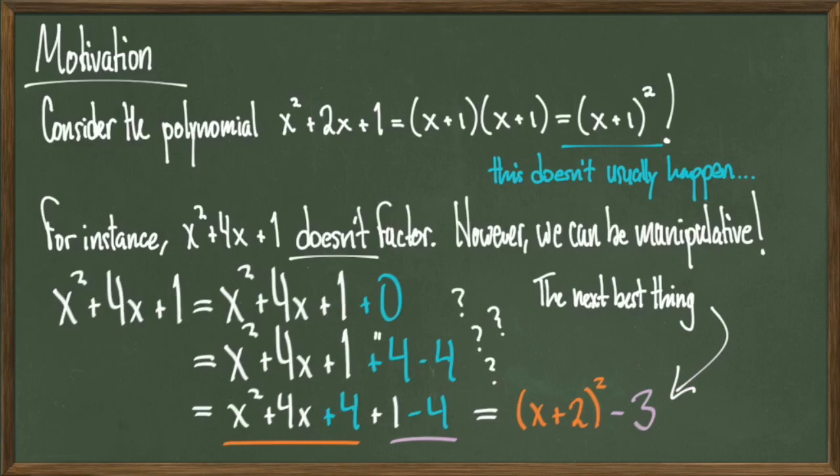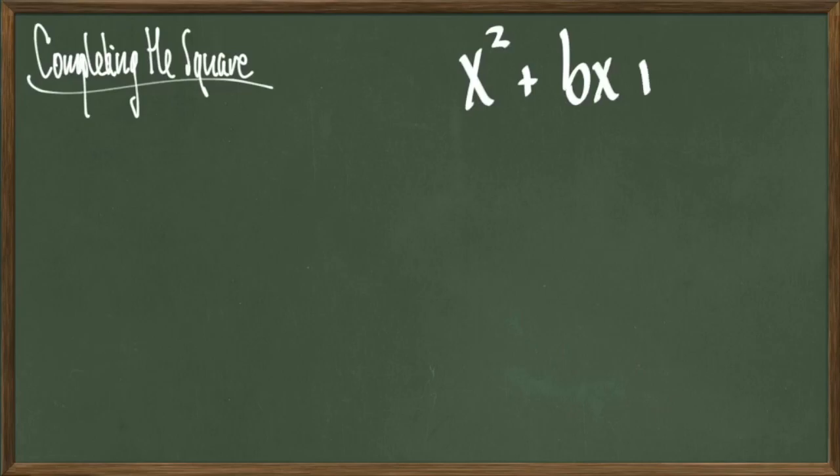But at the moment, this 4 - 4 kind of came out of nowhere. So the question is, how did I come up with this term, and why did it work out so well? Well, that's where completing the square comes in. Completing the square is a technique of taking the polynomial x² + bx + c, and then writing it as the square of a degree one polynomial plus or minus some leftover term, which will probably be a number.